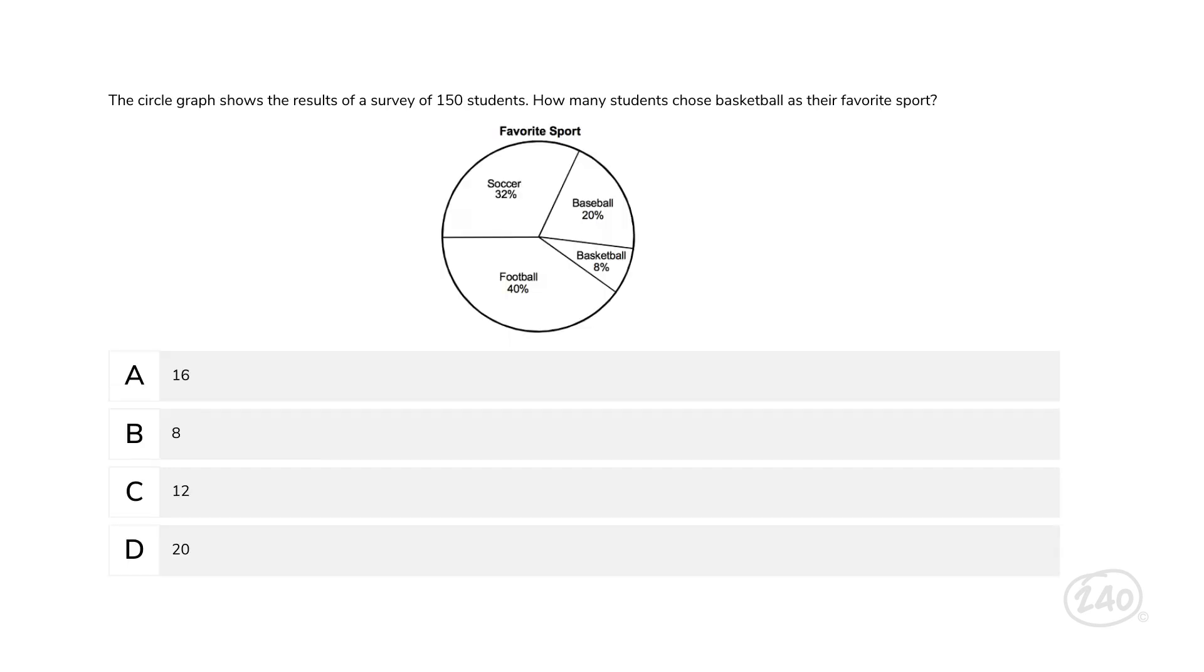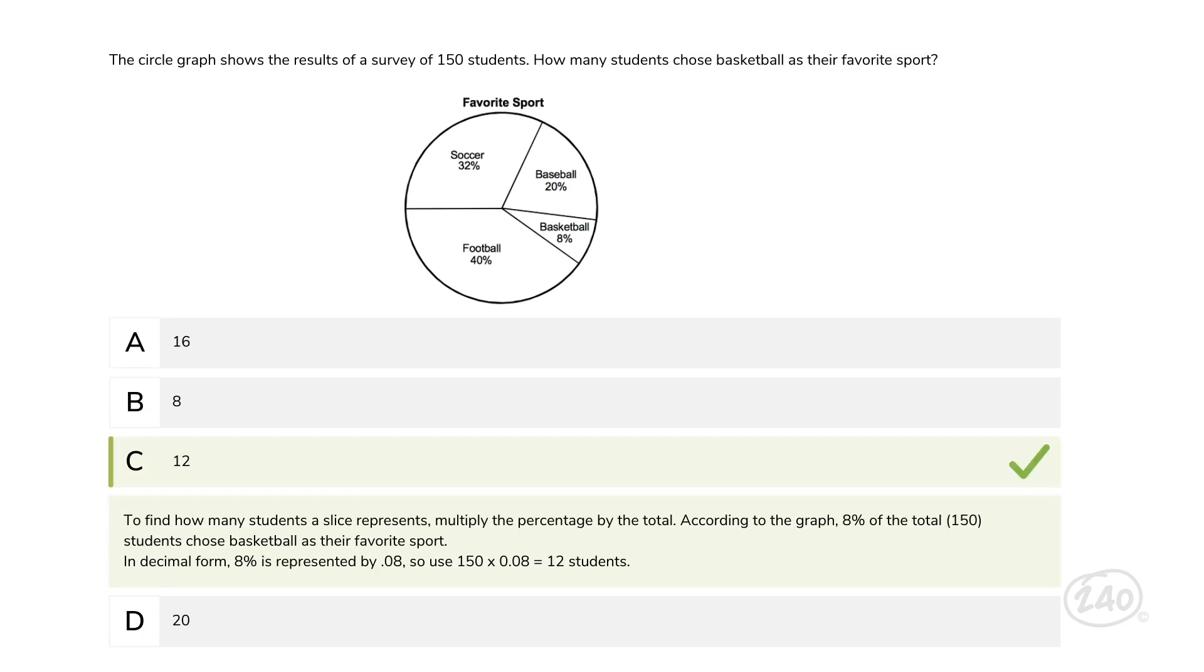The circle graph shows the results of a survey of 150 students. How many students chose basketball as their favorite sport? This problem gives us survey data, a pie chart, and asks how many students chose basketball as their favorite sport. Since 150 students were asked, we need to multiply the percentage by that total. So 8% times 150. 8% times 150 gives us a total of 12 students. Option C is correct. That's a wrap on domain 1.